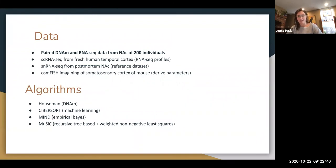And then the three different types of reference data they used were single cell RNA-seq from fresh human temporal cortex, and then single nucleus RNA-seq from postmortem NAC, and then osmFISH imaging of somatosensory cortex of mouse. So yeah, those are the three different reference data sets.